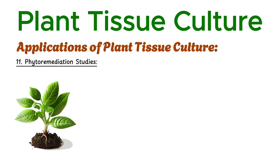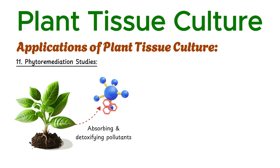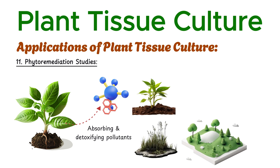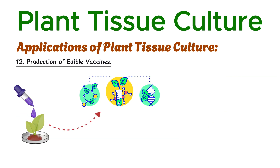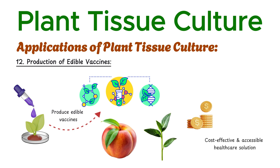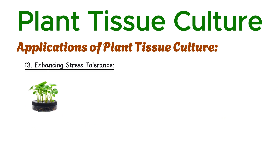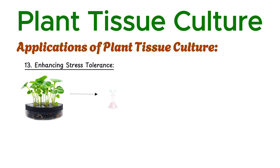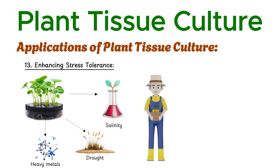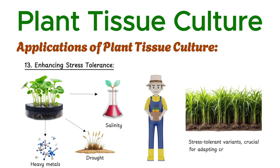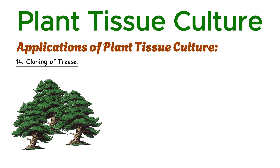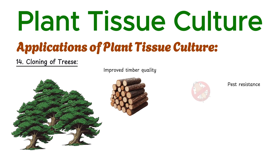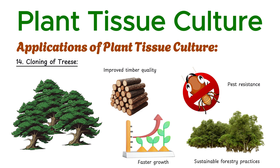Tissue culture is instrumental in developing plants capable of absorbing and detoxifying pollutants from soil, water, and air — essential for environmental cleanup and sustainability. Cultured plant cells are being engineered to produce edible vaccines, which can be delivered through fruits or leaves, offering a cost-effective healthcare solution. By culturing plant cells under stress conditions such as salinity, drought, or heavy metals, researchers can select and propagate stress-tolerant variants, crucial for adapting crops to changing environments. Tissue culture also allows the cloning of trees with desirable traits like improved timber quality, pest resistance, or faster growth, supporting sustainable forestry practices.